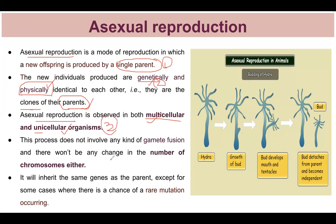These three points are very important in the asexual reproduction case. There is no gamete fusion within it. Gamete means sex cells — male gametes and female gametes, i.e., the male or female sex cells. Since only a single parent is involved, there is no scenario of male and female, so there is no fusion. The number of chromosomes does not change.